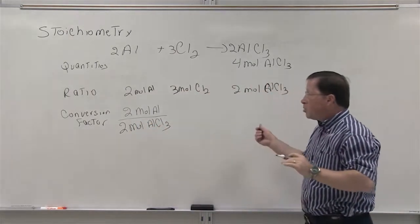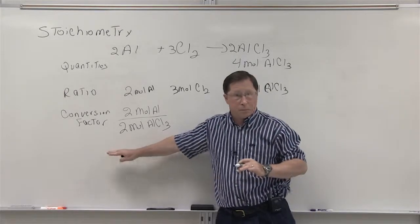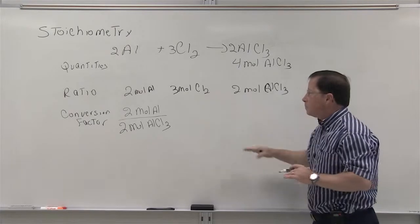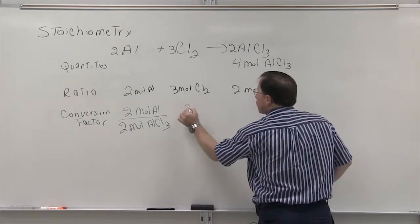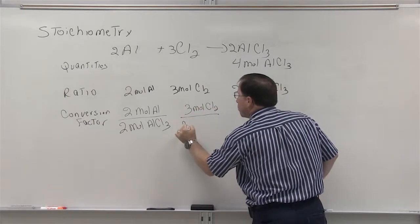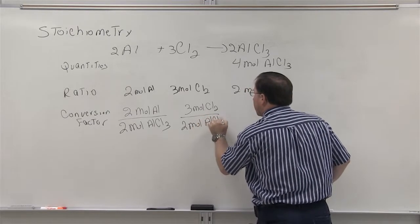And the ratio is called a conversion factor. We do the same thing here for chlorine. There's three moles of chlorine for every two moles of aluminum chloride.